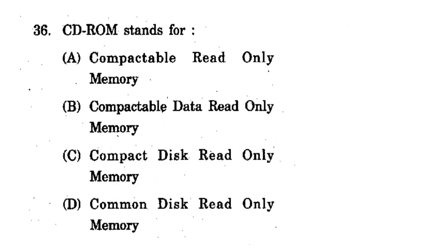Question 36: CD-ROM stands for what? Options: Compactable Read Only Memory; Compactable Data Read Memory; Compact Disk Read Only Memory; Common Disk Read Only Memory. The correct option is C - Compact Disk Read Only Memory. 'Compactable' and 'Common' are wrong; the correct term is 'compact disk.'